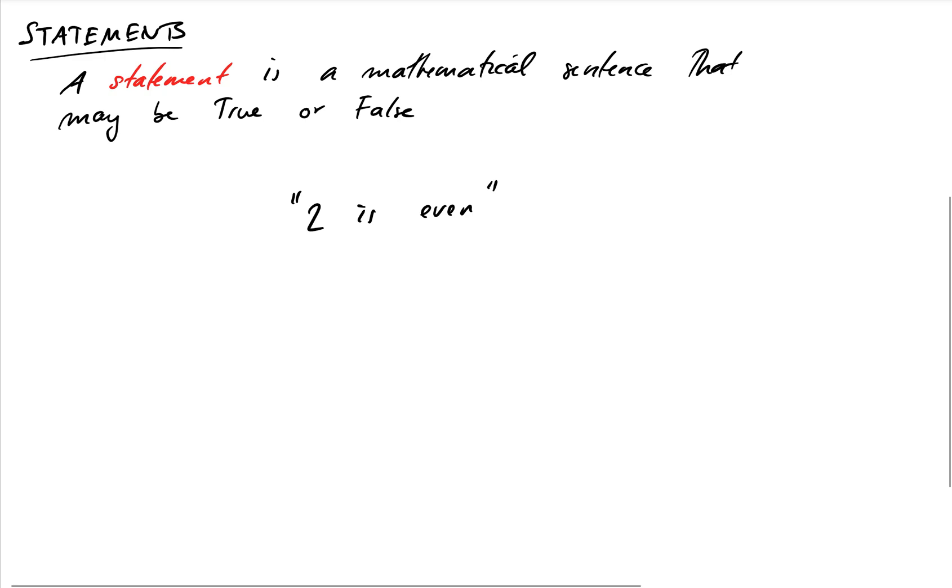So examples might be something like the statement 2 is even. That is a mathematical statement. It can either be true or it's false. We know it's true. There might be a more complicated one. It would be something like there are infinitely many primes, or infinitely many pairs of primes that differ by 2. And this is a complicated statement, and it's one that has not yet even been proven. We do not know, although we strongly suspect that it's true. But this is the twin prime conjecture, for example.